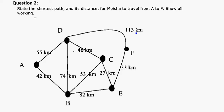All right, so looking at question 2, they're asking us to state the shortest path and its distance for Moisha to travel from A to F, and we need to show all working. So this is a shortest path problem, not a minimum spanning tree. They're not saying I have to go to every single node or anything or on every single path. I just need to get from A to F as fast as possible.